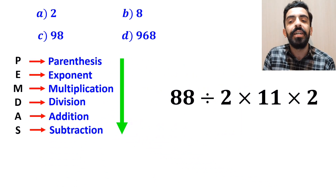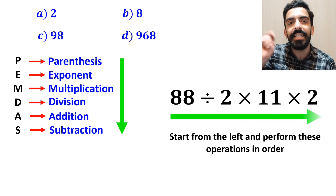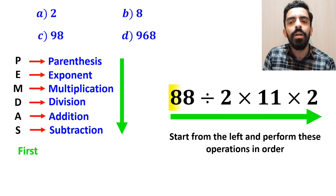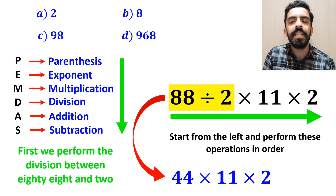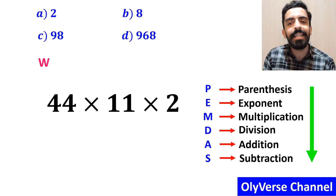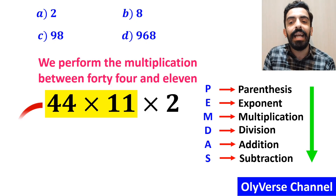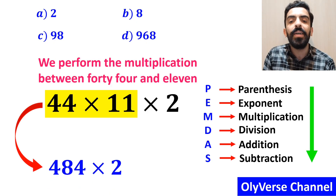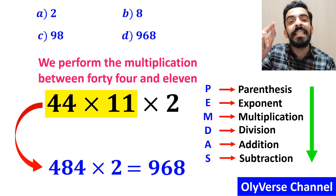We must pay close attention that multiplication and division have exactly the same level of priority in the PEMDAS rule. In this situation, the best thing to do is to start from the left and perform these operations in order. So first we perform the division between 88 and 2, which simplifies the expression to 44 multiplied by 11 and again multiplied by 2. In the next step, we perform the multiplication between 44 and 11, giving us 484 times 2, which finally gives the answer 968.